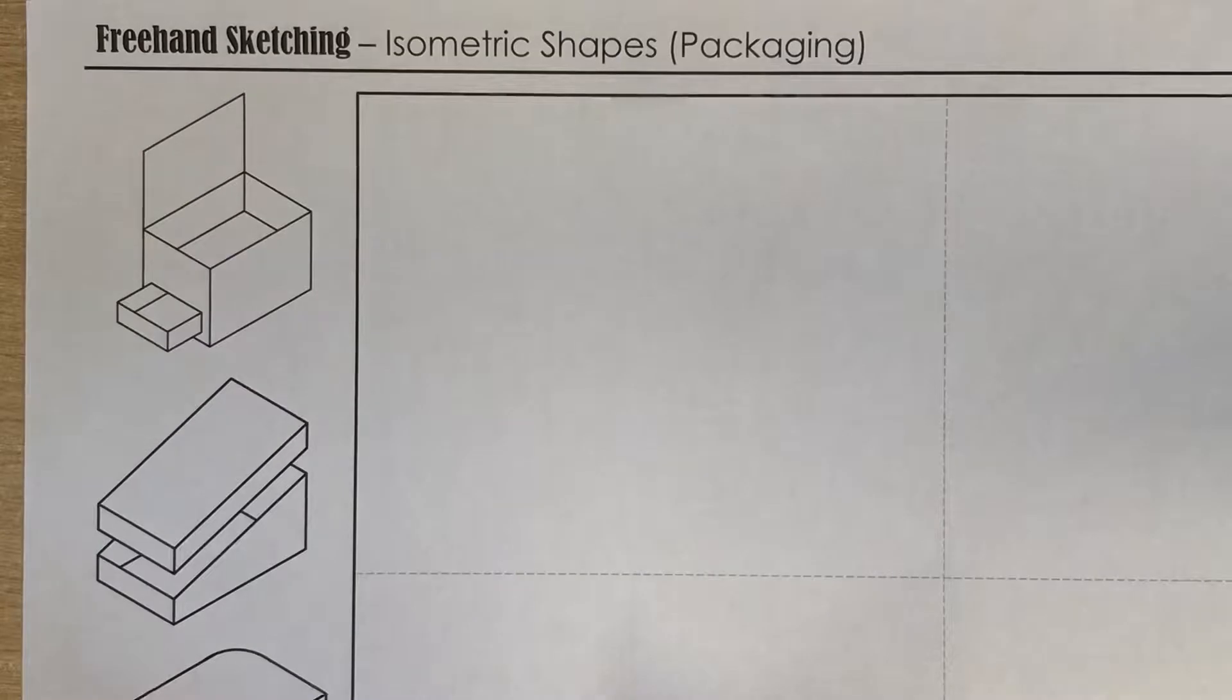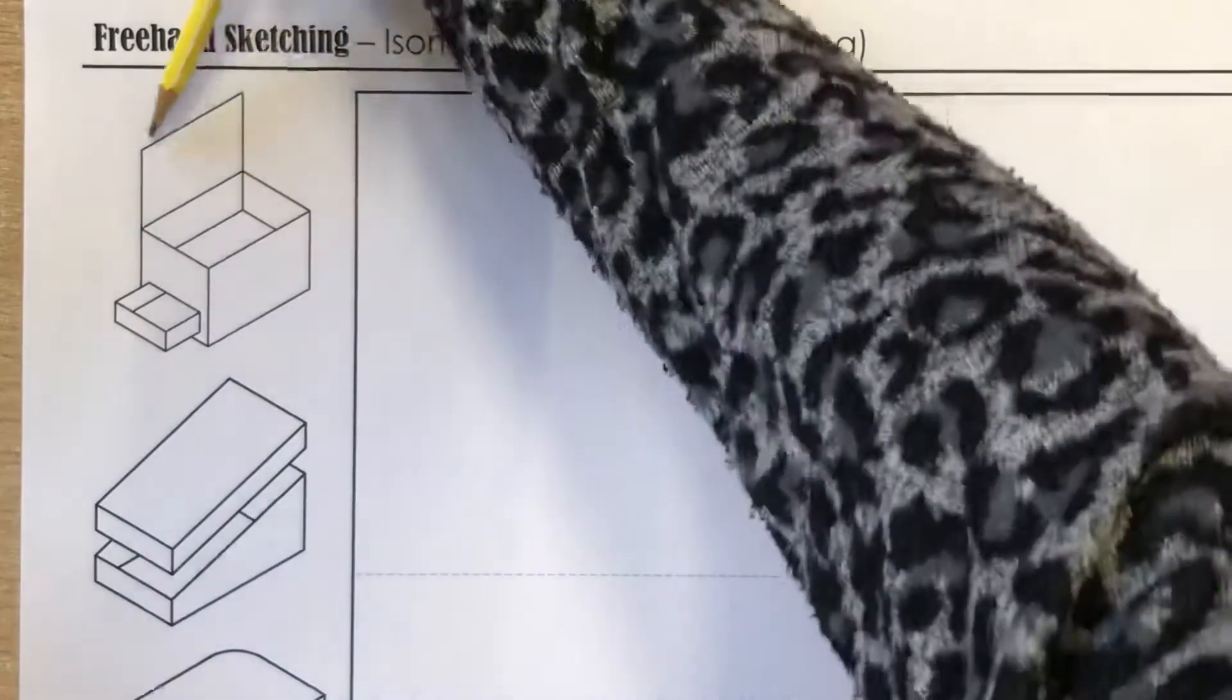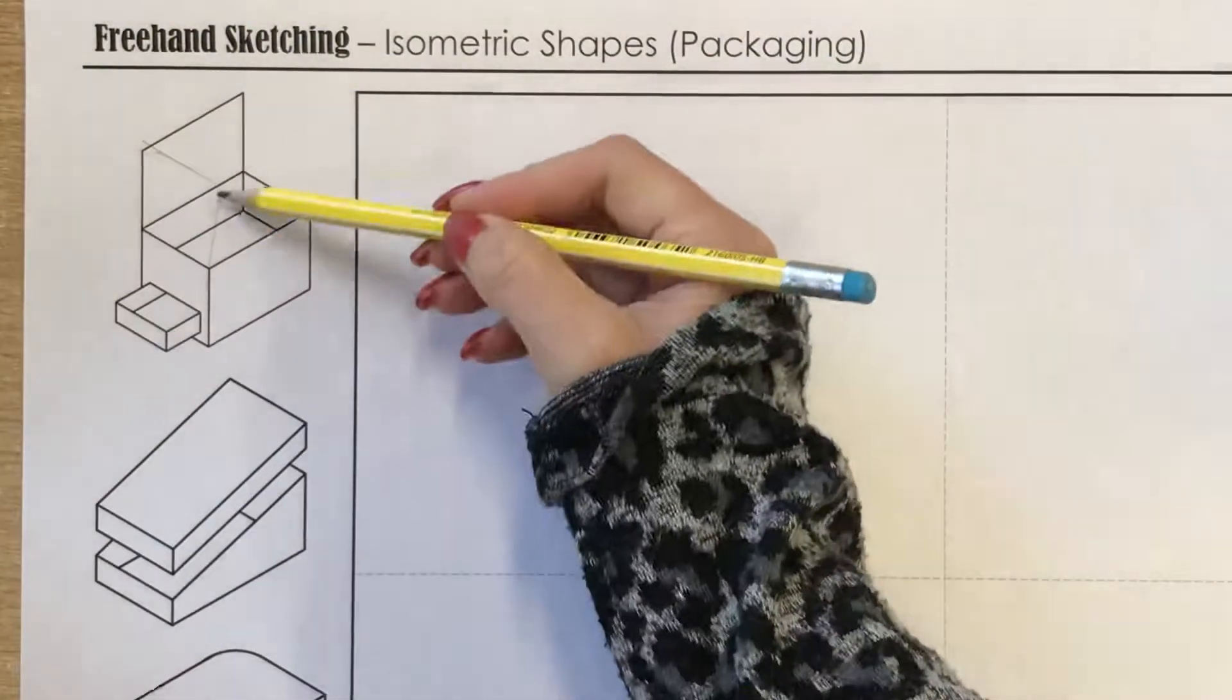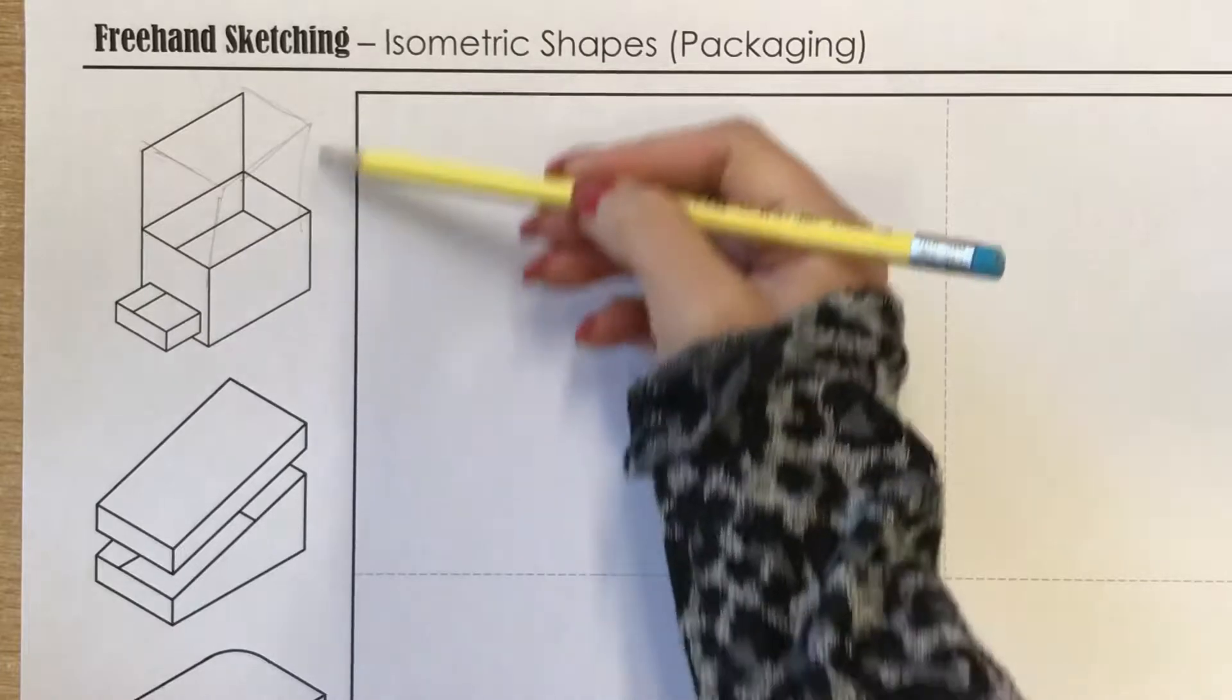It's actually the same technique as technical drawing. Always start with either a cube or rectangle depending on your shape. This one has quite a high lid part, so if that was to be completed, it would be a tall rectangle.